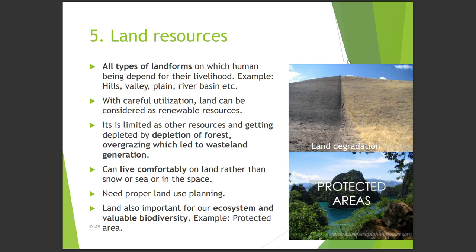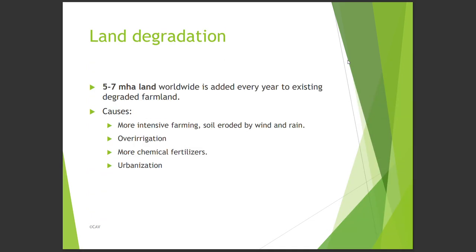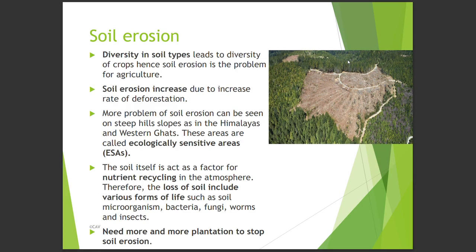Land is also important for our ecosystem and valuable biodiversity. Five to seven mega hectares of land worldwide are added every year to existing degraded farmland. The reasons include more intensive farming, soil eroded by wind and rain, over-irrigation, more chemical fertilizers, and urbanization. Diversity in soil types leads to diversity of crops, hence soil erosion is a problem for agriculture too. Soil erosion increases with the rate of deforestation. More soil erosion can be seen on steep hill slopes, as in the Himalayas and Western Ghats — these areas are called ecologically sensitive areas. This is important and you can expect MCQs from there.